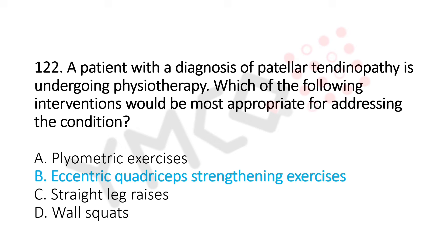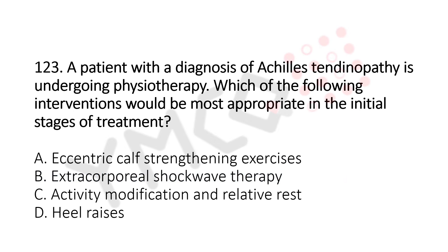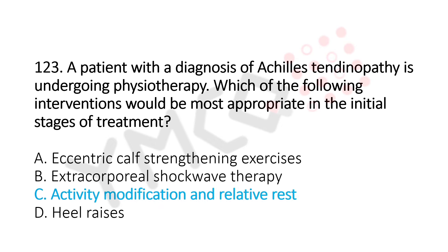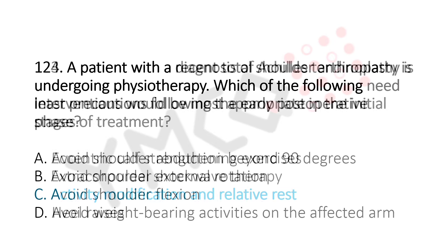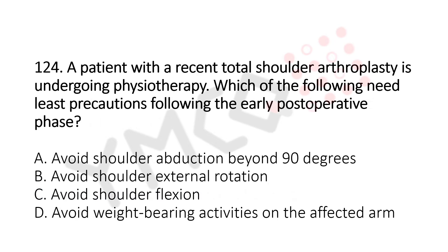Now let's move to question number 123. A patient with a diagnosis of Achilles tendinopathy is undergoing physiotherapy. Which of the following interventions would be the most appropriate in the initial stages of treatment? Option A: eccentric calf strengthening exercises. Option B: extracorporeal shockwave therapy. Option C: activity modification and relative rest. Option D: heel raise. The answer is option C: activity modification and relative rest.